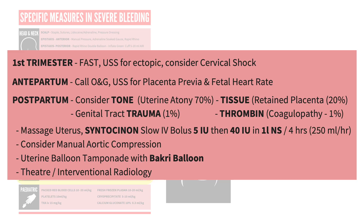For obstetric hemorrhage, we think about which trimester the bleeding is in and get a FAST scan to identify the issue, or a formal ultrasound to find an ectopic pregnancy. We consider cervical shock as a cause of the shock presentation and examine and remove any products from the os. In antepartum hemorrhage and late pregnancy, we want urgent obstetrics and gynecology input with imaging to identify the site of bleeding and assess fetal position and viability.